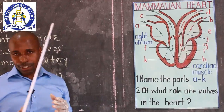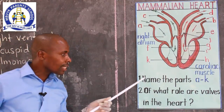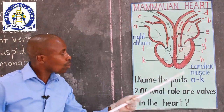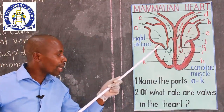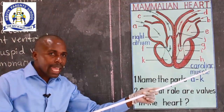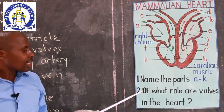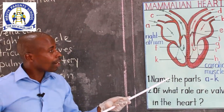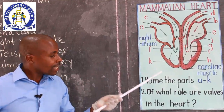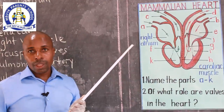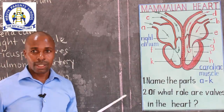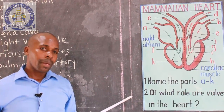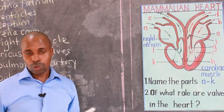Now we are going to have an activity. Number one: name the parts A to K — but first draw the heart, then name the parts A up to K. Then write about what role the valves in the heart play, because you have already seen the tricuspid and bicuspid valves — what is their use? Thank you very much for today's lesson. I wish you the best. Stay safe, always sanitize, wash your hands, and keep social distancing to control the spread of COVID.